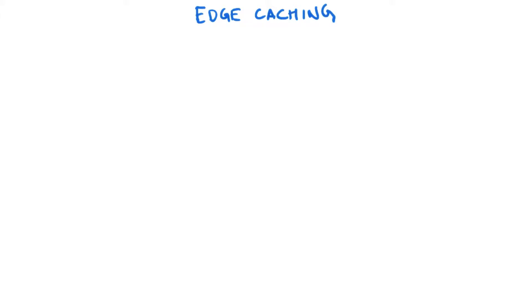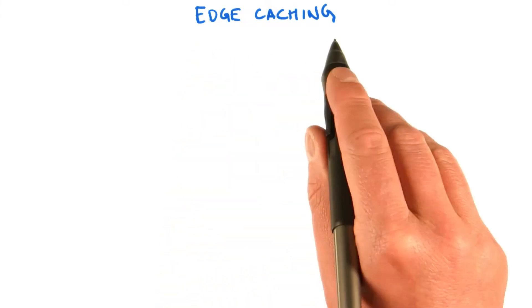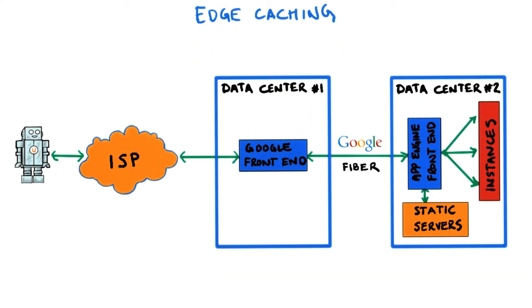Another heavy duty topic which is good to know about is edge caching. To describe this, let's look at the information flow for your App Engine application.